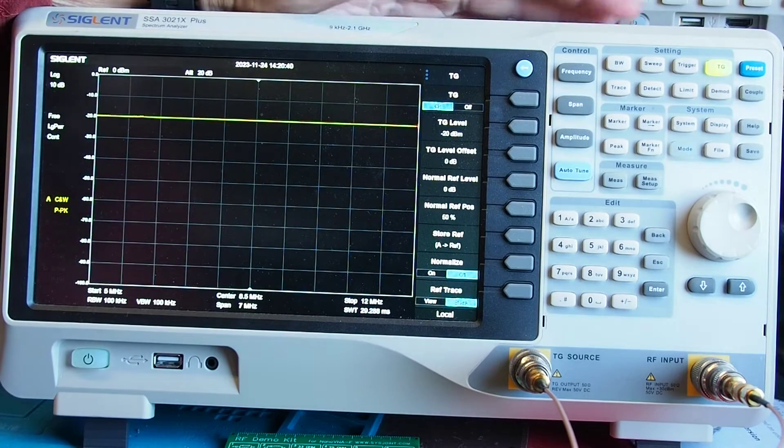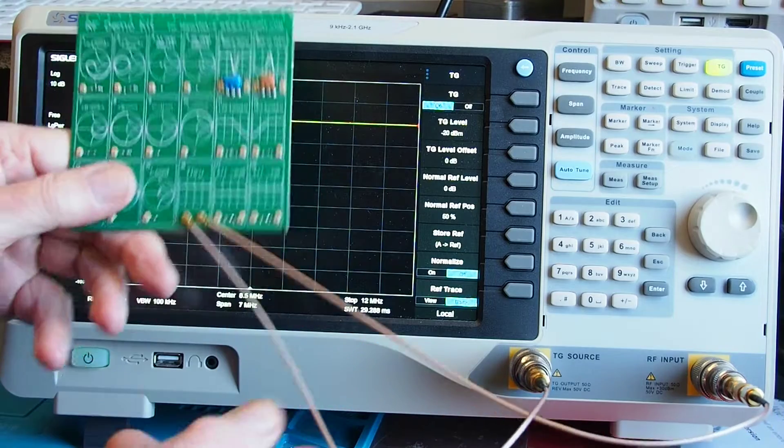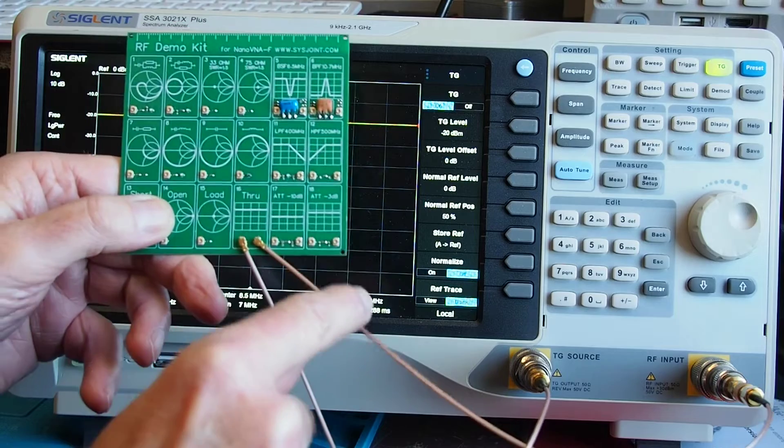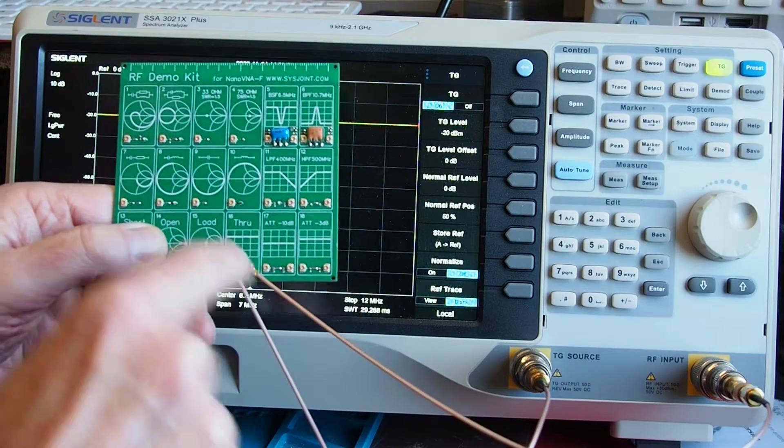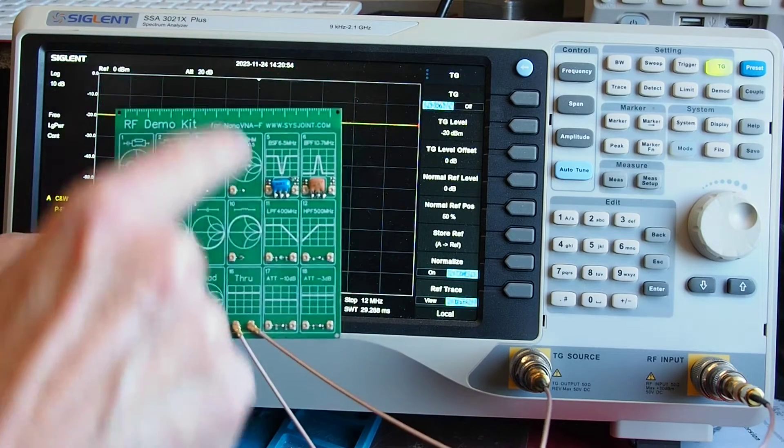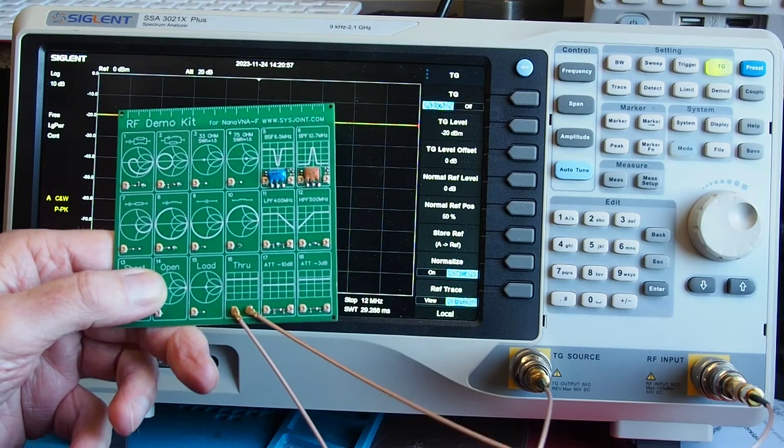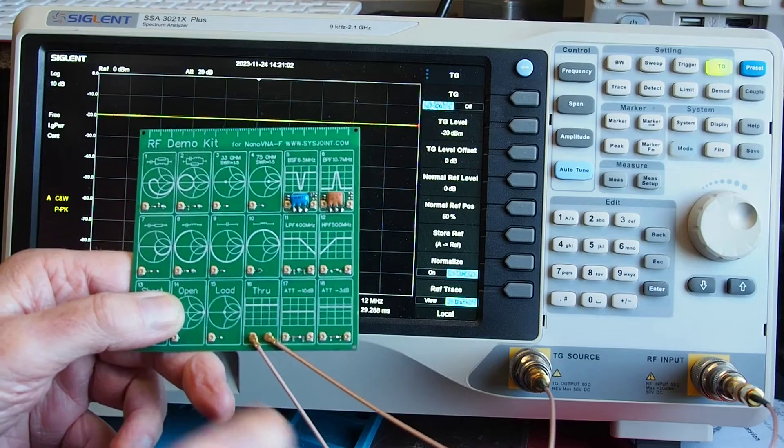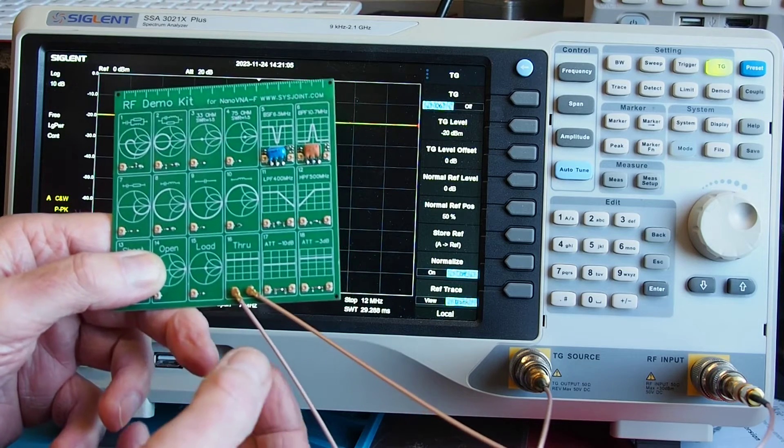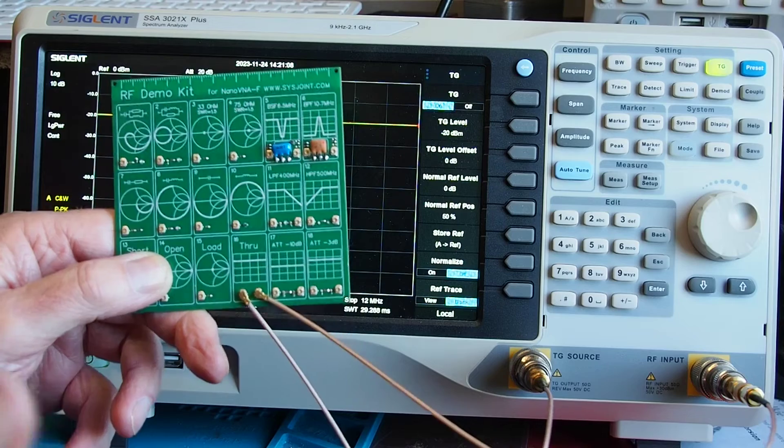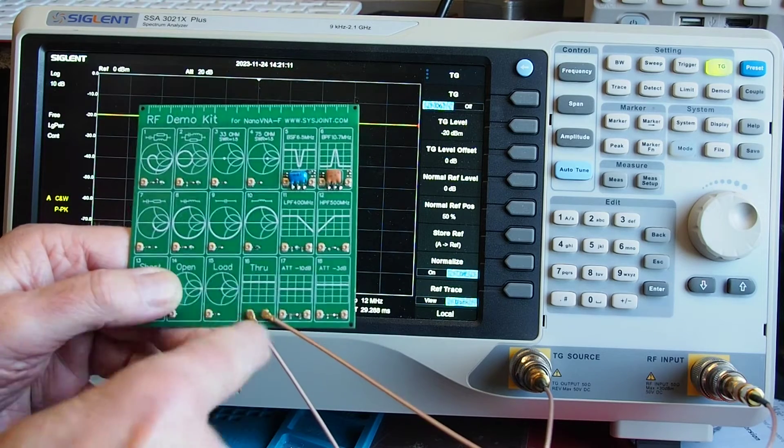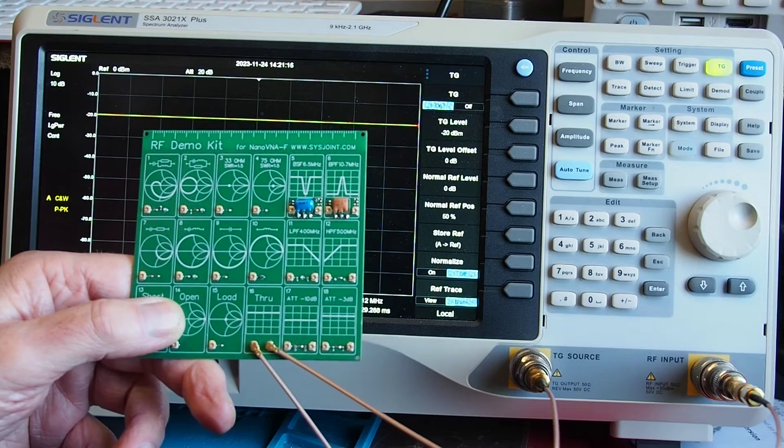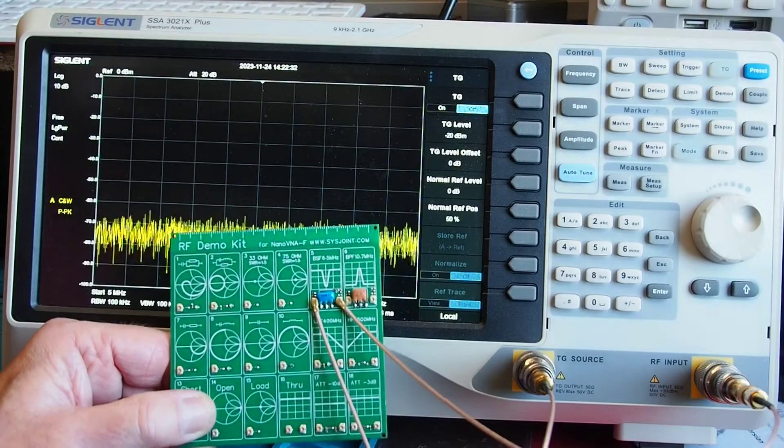But a point I want to make is that what I've got here I've got output of the tracking generator connected to input of the spectrum analyzer and by using the through connection on here I've actually allowed for anything which might be occurring in these two little fly leads as well so I've minimized the error if you like. I suppose another way to say it is I've actually included these cables in the calibration. So now what we'll do is we'll get them connected up to one of the filters and then we'll look at the kind of response we get.